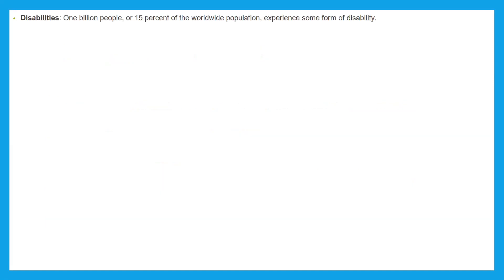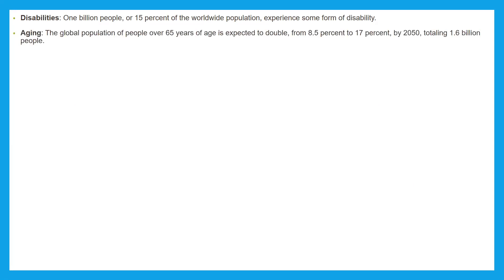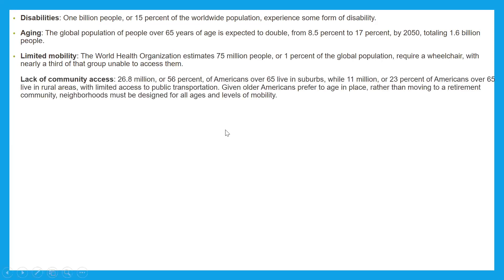Regarding disabilities: one billion people, or 15% of the world population, experience some form of disability. On aging, the global population of people over 65 years of age is expected to double from 8.5% to 17% by 2050, totaling 1.6 billion people. On limited mobility, the World Health Organization estimates 75 million people, or 1% of the global population, require a wheelchair, with nearly a third of that group unable to access them.